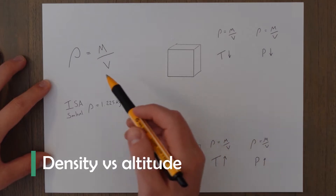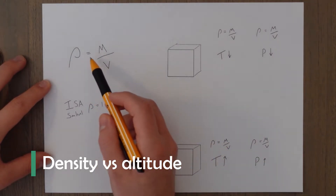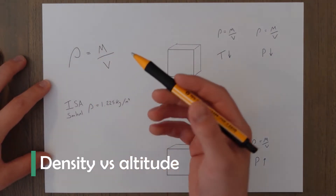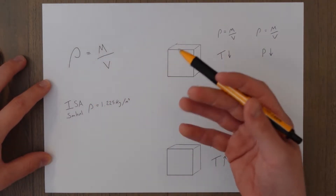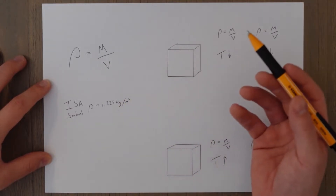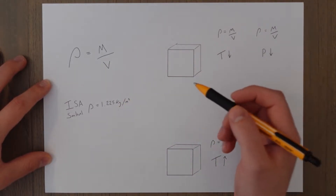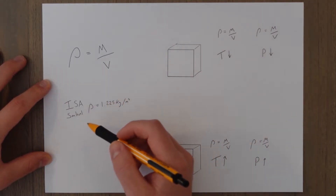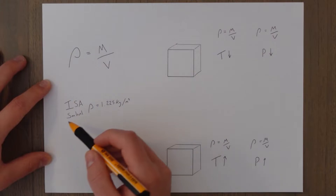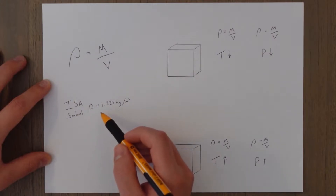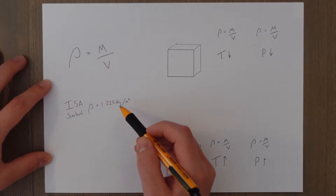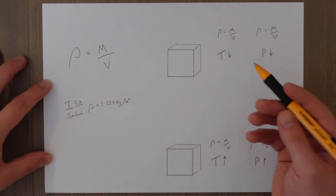Density is given by the formula rho equals mass over volume, which gives us a unit for density of kilograms per meter cubed. In the international standard atmosphere, the sea level density is 1.225 kilograms per meter cubed.